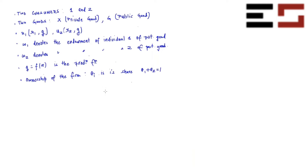What you can do is consider endowments Omega 1 plus Omega 2 equal to 10 — that's the total endowment of the private good in the economy. And let's assume that the production function is G equals F(X) equals X. So it's just a simple CRS production function.